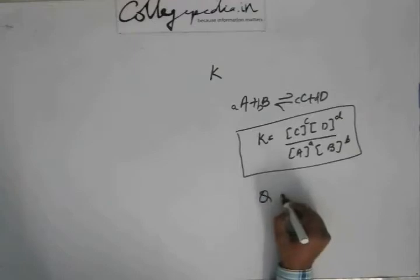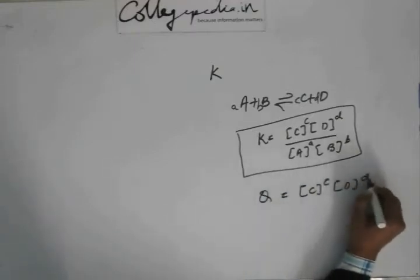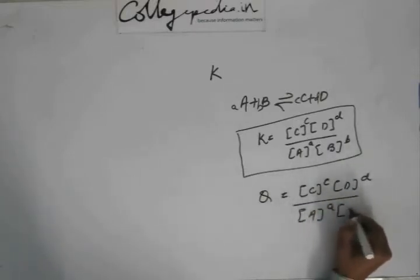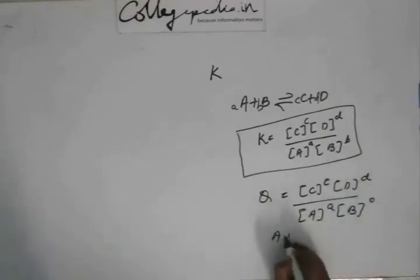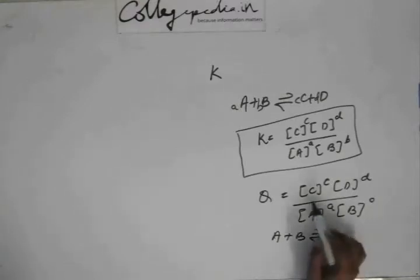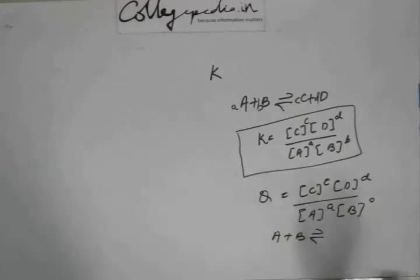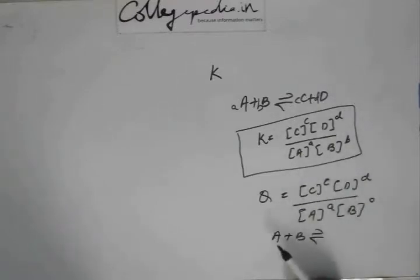There is also an expression Q defined, in which the expression is the same. The difference is that the concentration used is any concentration — not the concentration at equilibrium. For example, suppose the reaction has not begun yet: there was only A and B and no C and D, so the concentration of C and D are zero, and Q will be zero. If the reaction is forcefully completed to 100%, no A and B are left, so Q will be infinite.